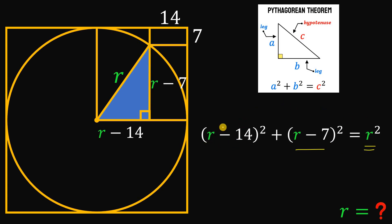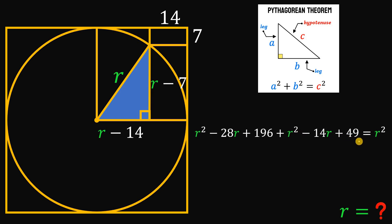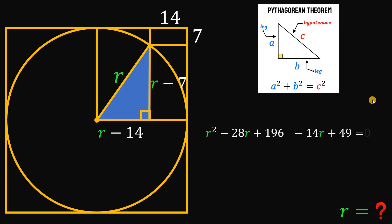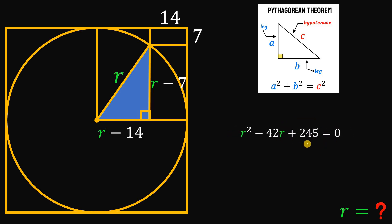We expand (r minus 14)² to get r² minus 28r plus 196, and (r minus 7)² to get r² minus 14r plus 49. We then subtract r² from both sides, eliminating the r² terms. Combining like terms gives us negative 42r plus 245 equals 0.